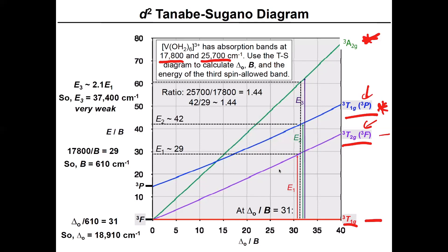But let's do this work. So how do you fit the diagram to the experiment or how do you fit the experimental data to the diagram? The ratio of the two absorption bands in the visible that you see are 25,700 wave numbers divided by 17,800 wave numbers. And that ratio tells you they're separated in energy by 1.44.